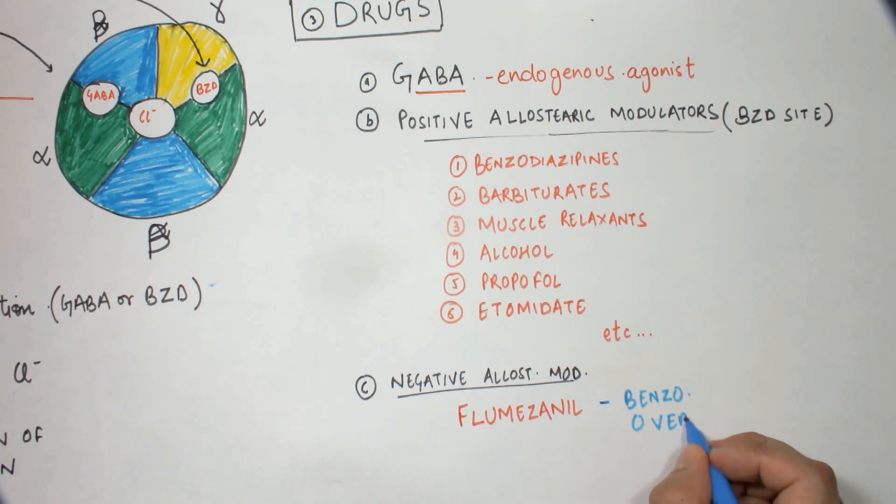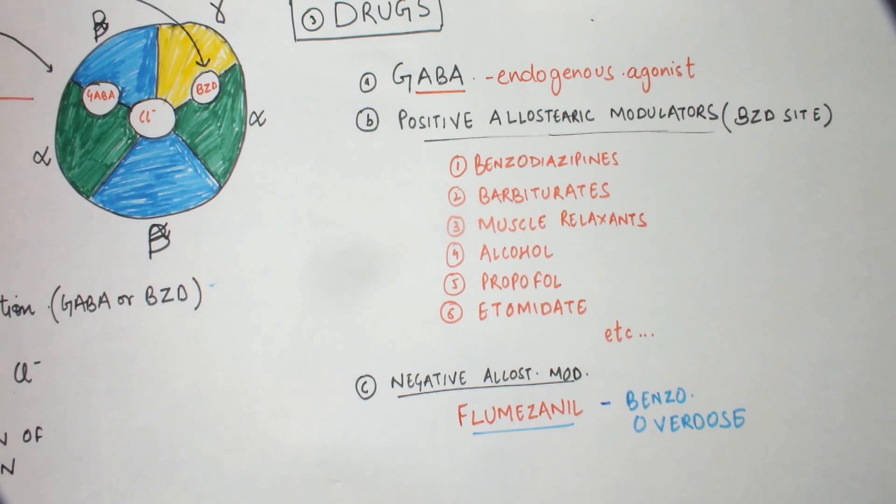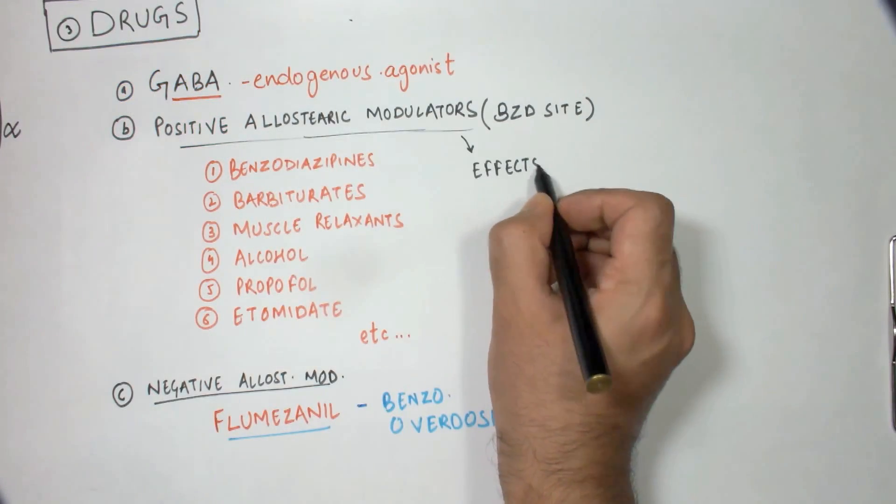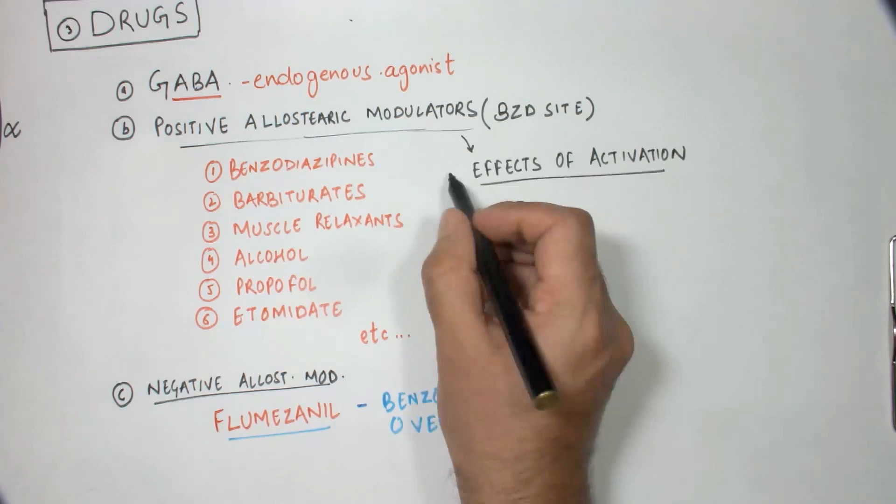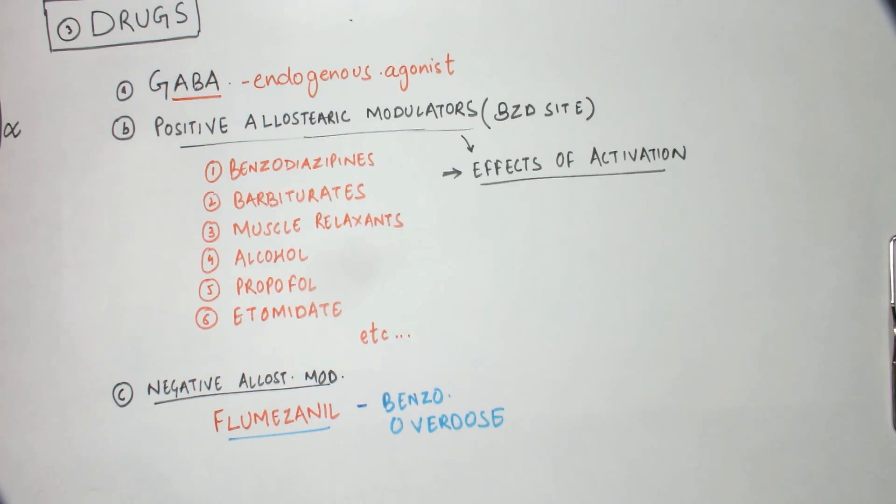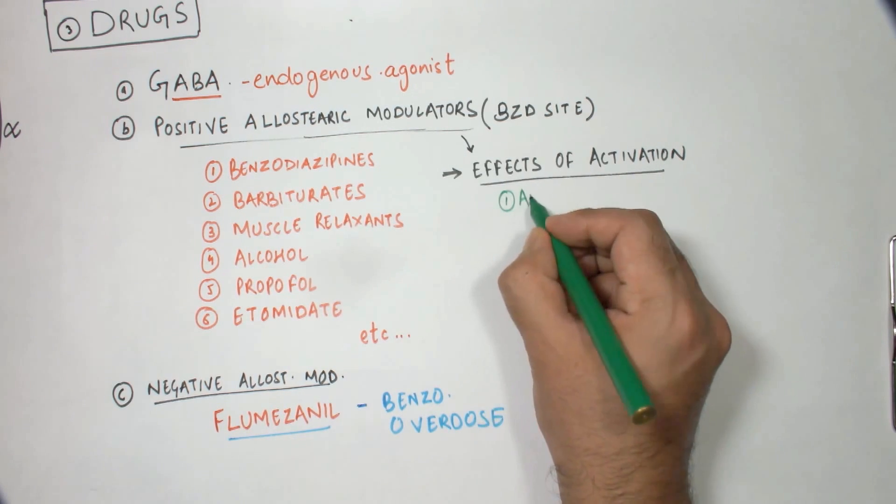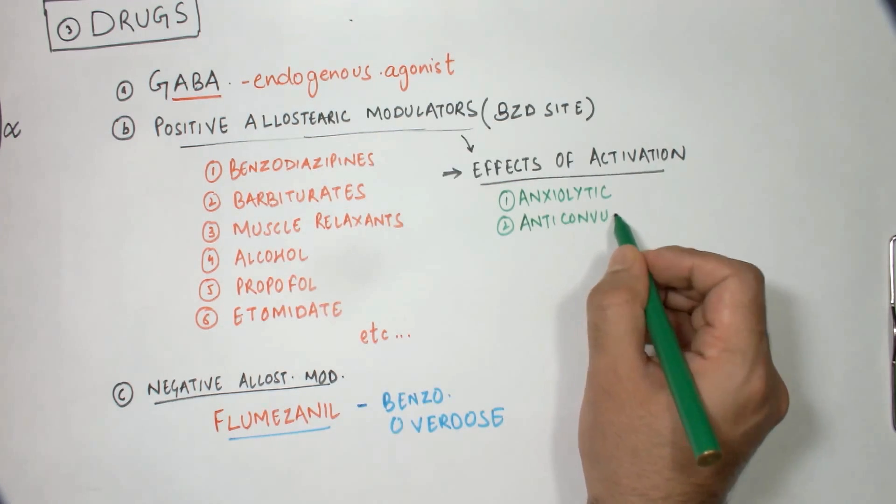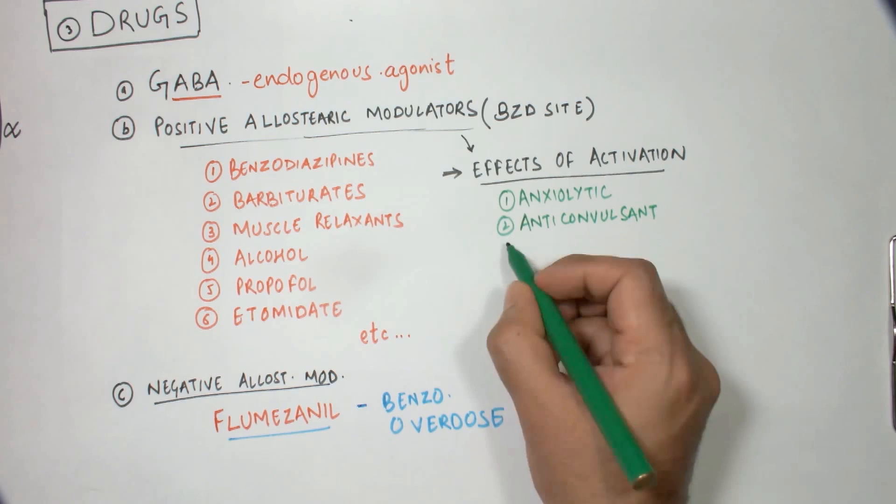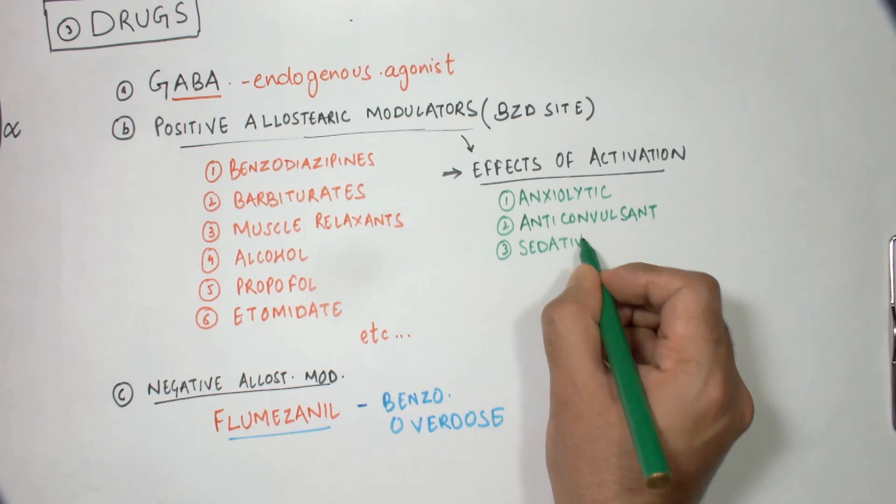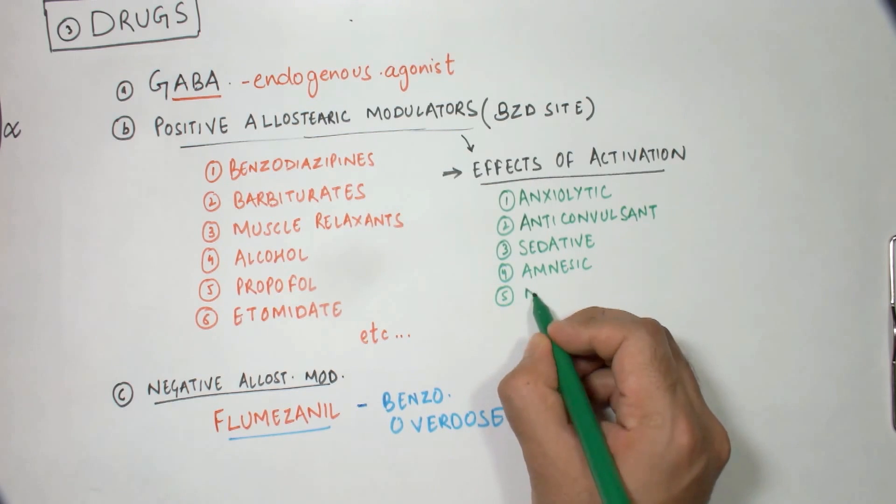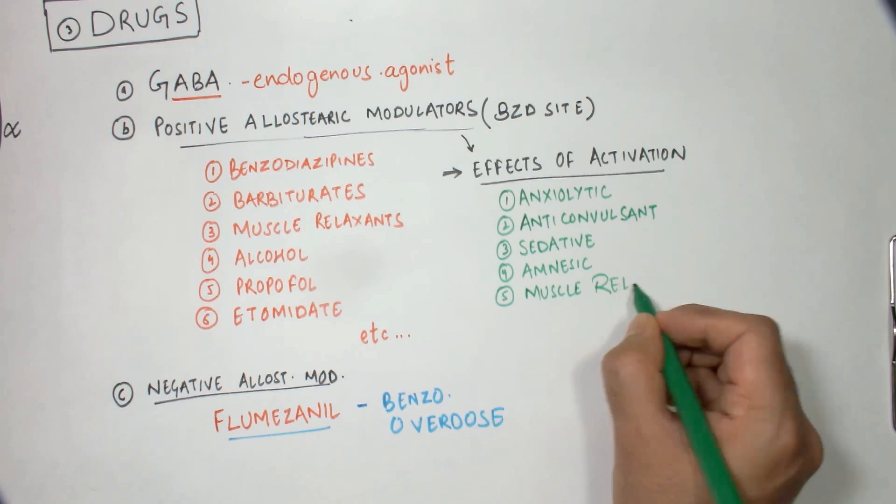Now let's look at the effects of activation of the GABA receptor. The various drugs which act on this receptor produce numerous effects, some of which are anxiolysis, anti-convulsant effect, sedative effect, partial amnesia, and muscle relaxation.